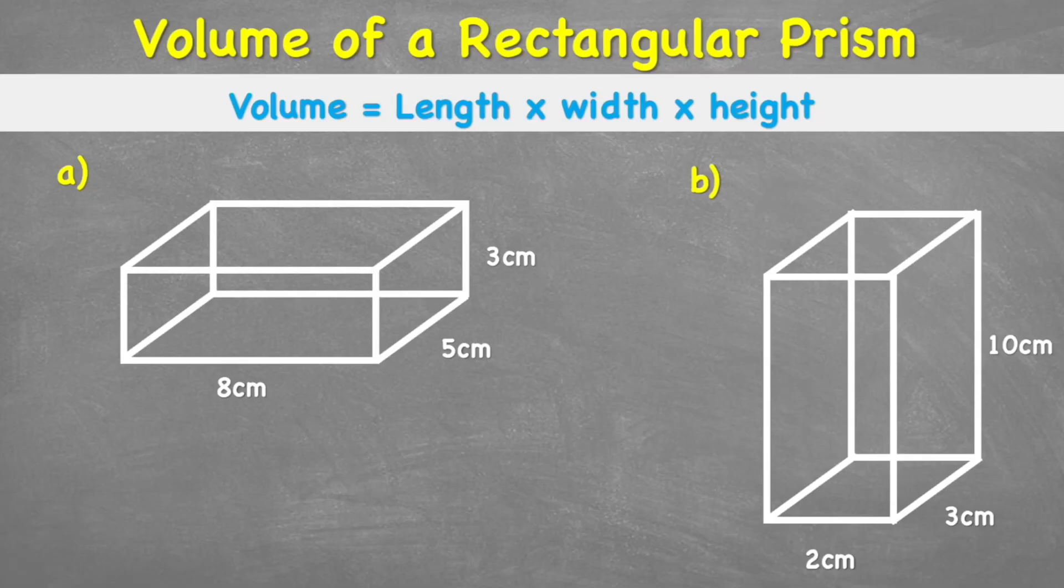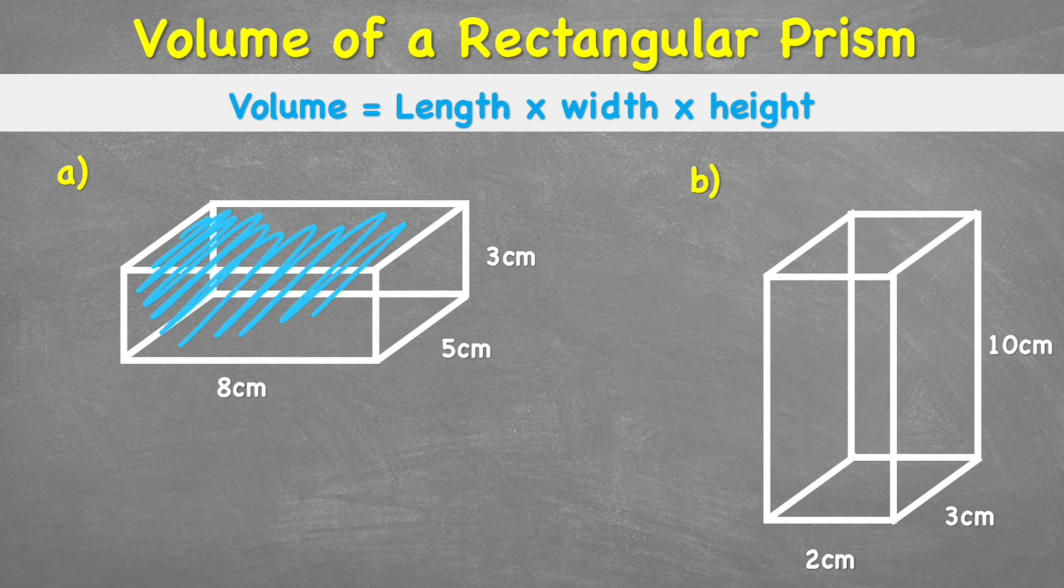So first of all, a rectangular prism is a 3D shape with six faces which are all rectangles. And the volume is the amount of space that it takes up. So all this space in the centre of the shape.